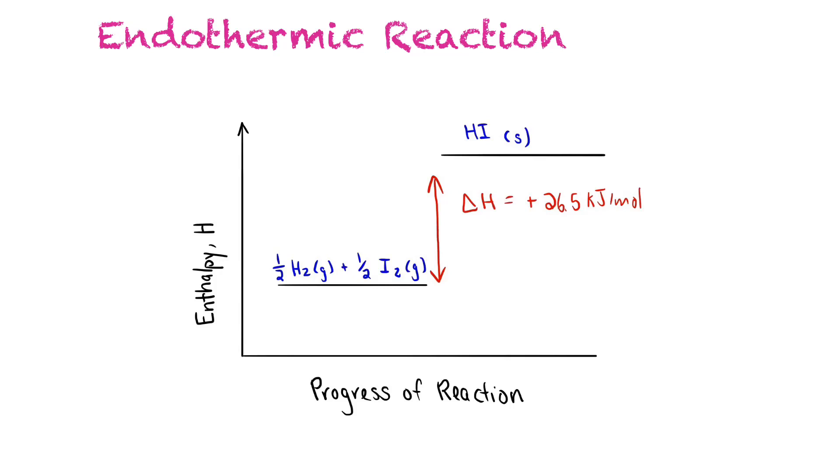In this example, endothermic reactions, remember, absorb energy. We have our reactants having a big jump, so they absorb energy to become hydrogen iodide, and our delta H value, therefore, is positive.